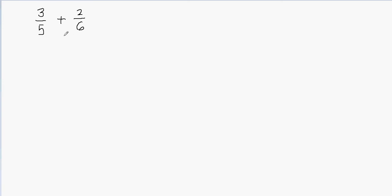I'll show you a simple way how to do that. I'm going to multiply each fraction with the denominator of the other fraction. Let's talk about this fraction first, 2 sixths. I have to multiply both fractions. I need to think about what to multiply here to make the denominators equal — I'll multiply each fraction with the denominator of the other fraction.